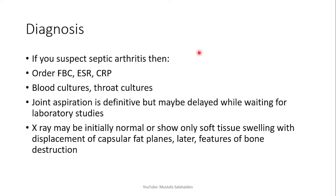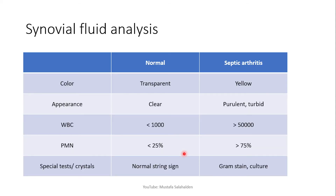If you suspect septic arthritis, you want to order a full blood count, erythrocyte sedimentation rate, and C-reactive protein, as well as blood cultures and throat cultures to detect any infection. Joint aspiration is the definitive diagnosis, but it is sometimes delayed while waiting for laboratory studies. X-ray may initially be normal or show only soft tissue swelling with displacement of capsular fat planes, but later shows features of bone destruction.